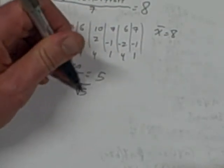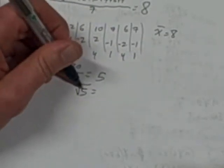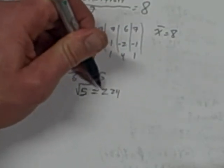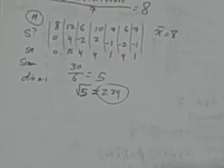Last thing we do is square root that. Square root of 5 is about, that's a 5 not an S, is about 2.24. So there's our standard deviation.